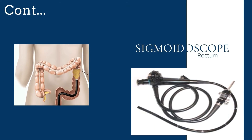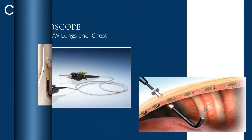The sigmoidoscope — the procedure is known as sigmoidoscopy, flexible sigmoidoscopy, or proctosigmoidoscopy. It is specially designed for the area of the rectum and sigmoid colon, that is, the lower part of the large intestine. It is inserted through the anus.